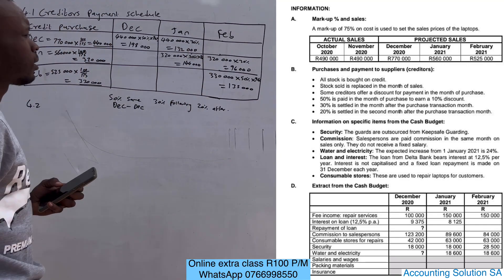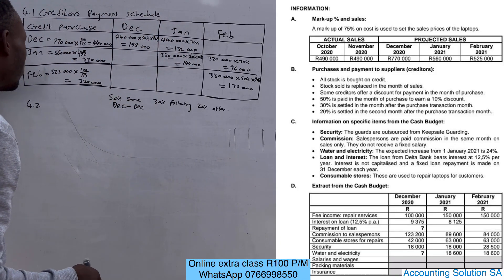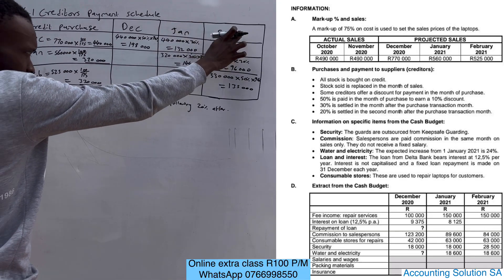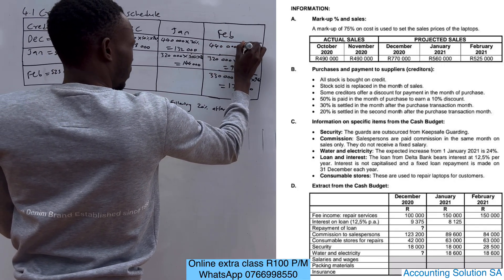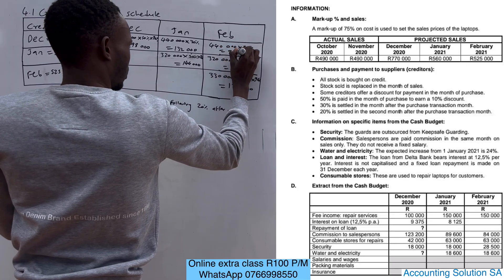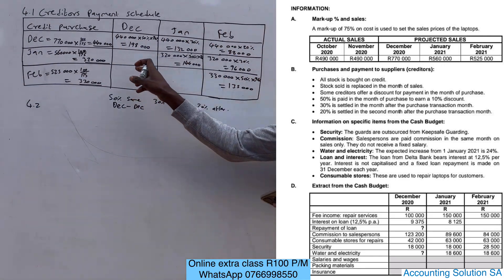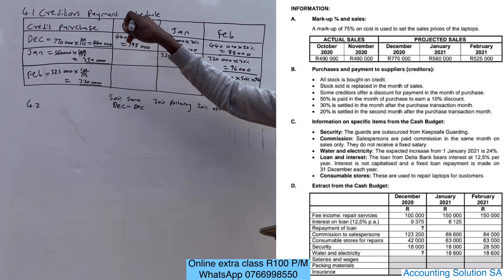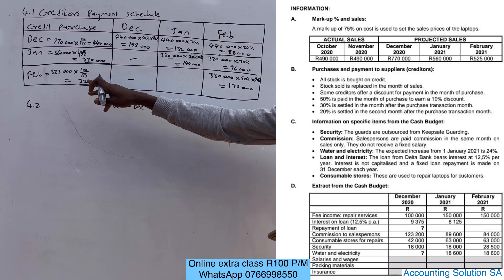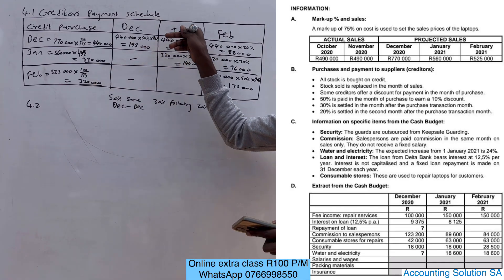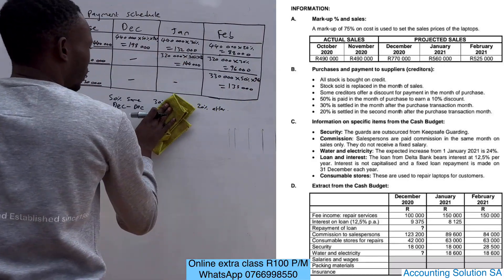For the 20 percent — the month after the following month: if we're talking about December, the following month is January and the month after is February. So 440,000 multiplied by 20 percent gives 88,000, recorded in February. There are no entries for the earlier periods because those months fall before the schedule range, and that's how we compile a creditors payment schedule — very simple and straightforward.